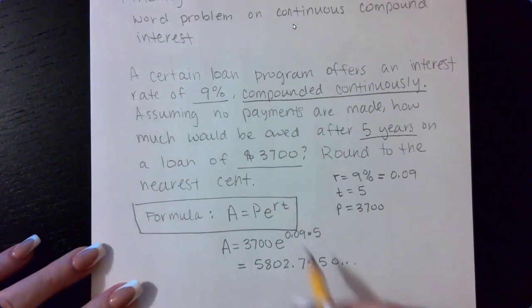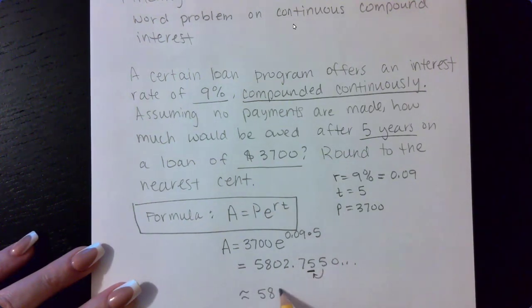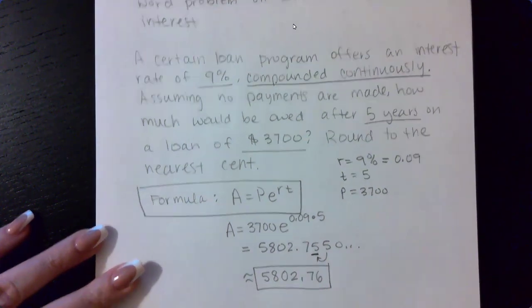It is money, so we have to round to the nearest cent. The second decimal after the decimal point is our cents. And this will make that go up. So it's going to be $5,802.76 and that is the final amount.